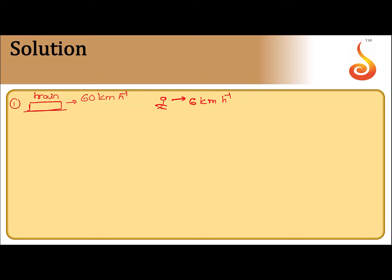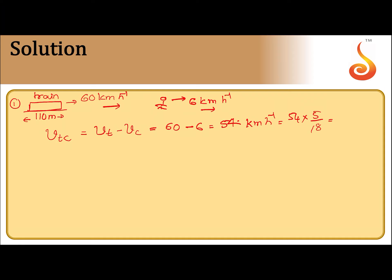In the first case, the velocity of the train with respect to the cyclist — that is, the relative velocity of the train with respect to the cyclist — is equal to the velocity of the train minus the velocity of the cyclist. Velocity of the train is 60; velocity of the cyclist is 6. Observe that both are moving along the same direction, so both velocities must have the same sign. 60 minus 6 equals 54 kilometers per hour, that is 54 × 5/18 = 15 meters per second. This is the velocity of the train with respect to the cyclist.